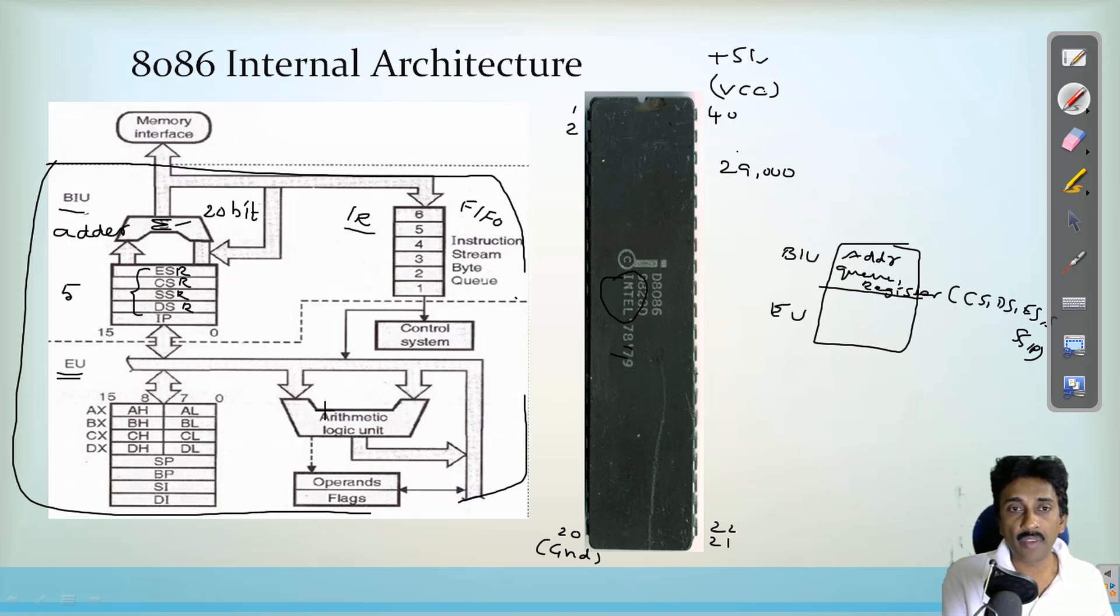In the execution unit, we have an arithmetic logic unit and control system. Coming to the control system, the internal operations can be made and can be performed by using this control system. Along with that, there may be a chance to send the address as well as the data for reading and writing operations, control system can be used. In the control system, we have a decoder unit.